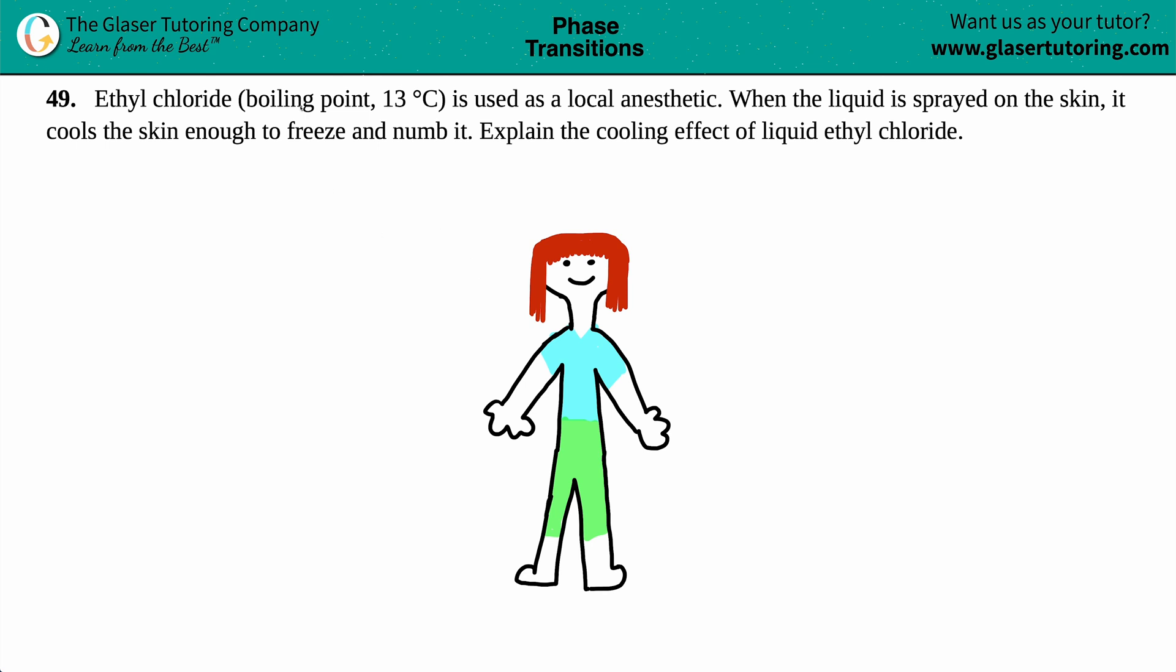Number 49: Ethyl chloride, which has a boiling point of 13 degrees Celsius, is used as a local anesthetic. When the liquid is sprayed onto the skin, it cools the skin enough to freeze and numb it. Explain the cooling effect of liquid ethyl chloride.